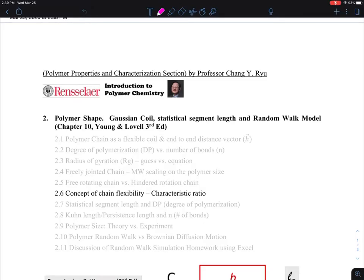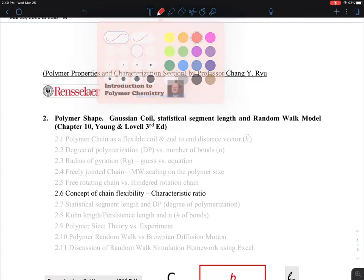Let's talk about the concept of characteristic ratio. This is complementary to the other concept, what we call the Kuhn length and the statistical segment. For this particular lecture, I'm going to focus on what is called the characteristic ratio.